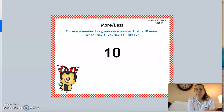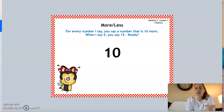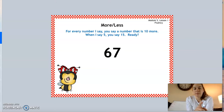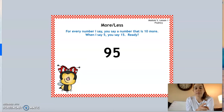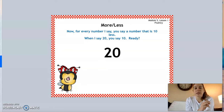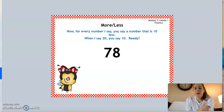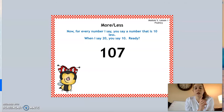Let's get started on our fluency. When I say a number, I'll point to you and I want you to say the number that's 10 more than that. Ready? 10 — good, 20. 67 — good, 77. 95 — good, 105. Now I want you to say what's 10 less than that number. Ready? 20 — good, 10. 78 — good, 68. 107 — good, 97.